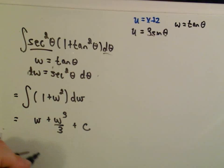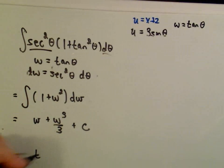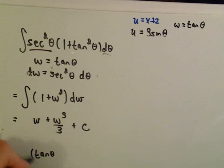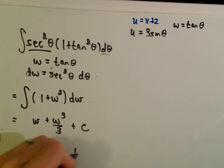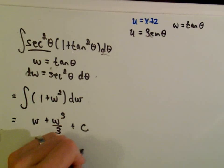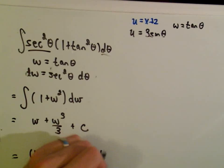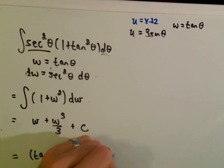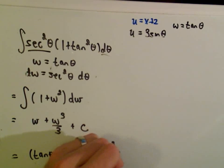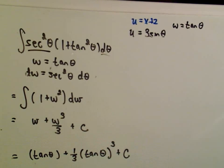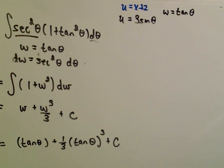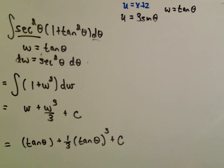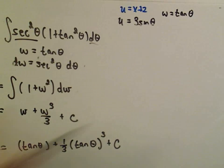We said w is tangent theta, so we get tangent theta plus 1 third tangent theta cubed plus c. But again, we didn't have thetas at the beginning either — we had x's.